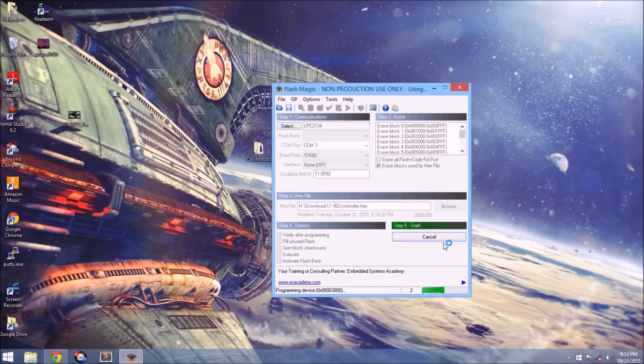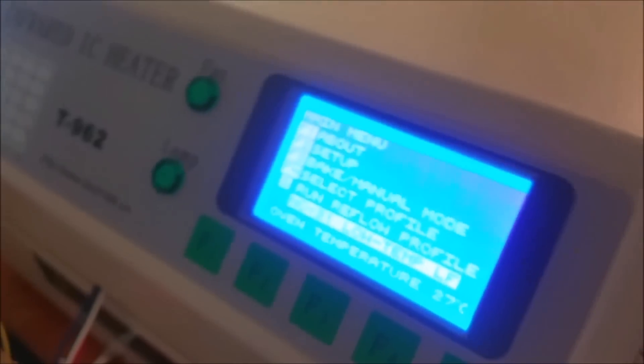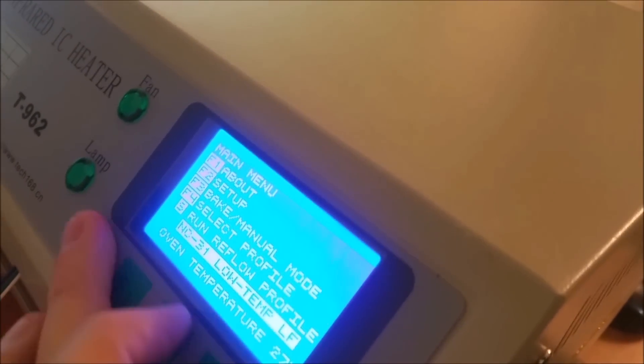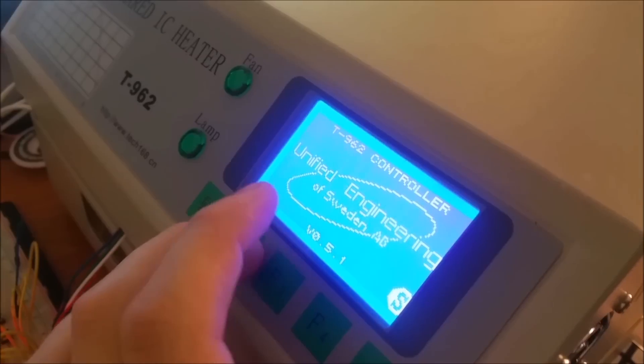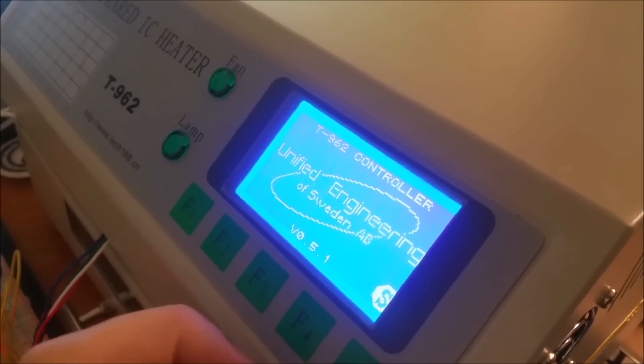When the tool reads finished, then ground the reset ISP pin with the button you wired. The oven should chirp and you'll see the Unified Engineering splash screen. If the screen is blank and you accidentally bricked the oven, don't worry, this actually happened to me. Try turning the oven on and off. If it's still bricked, turn the oven off, hold down the F1 button, and turn on the oven again. This will put the oven in bootloader mode and you can re-flash the software to the oven.